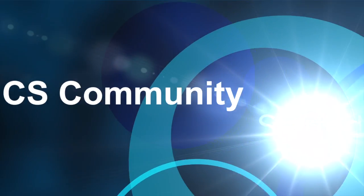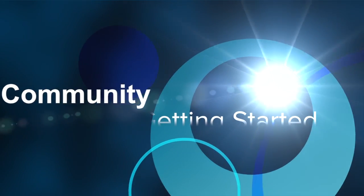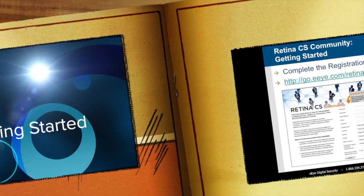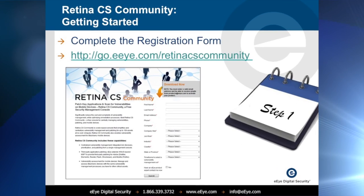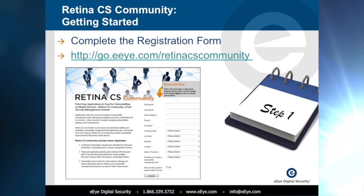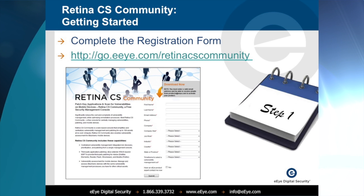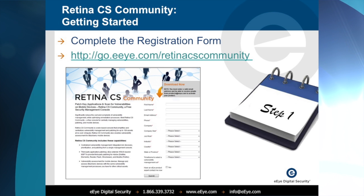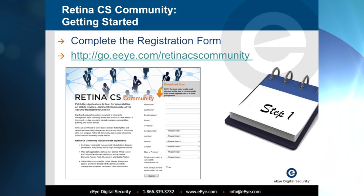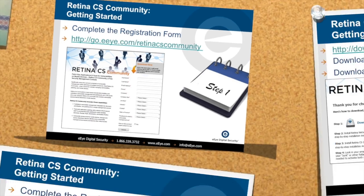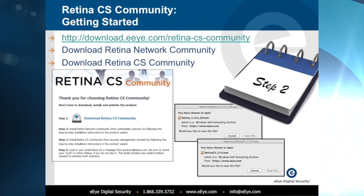Welcome to Getting Started with the Retina CS Community Edition. To begin using your free copy, please open a web browser and go to go.eeye.com/retinacscommunity and complete the online registration form. Once complete, please click Submit and the website will redirect you to a new page to download the components for Retina CS Community.